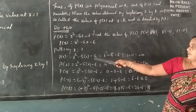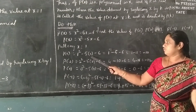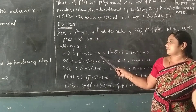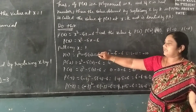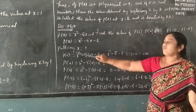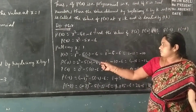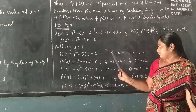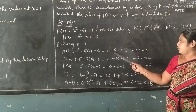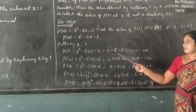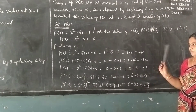Putting x = 1: P(1) = 1² - 5 × 1 - 6. So 1 - 5 - 6, which gives 1 - 11 = -10.